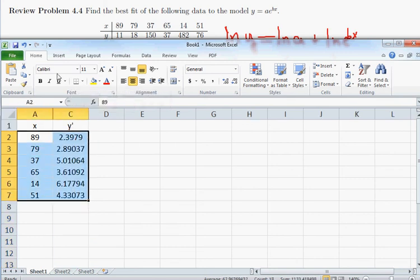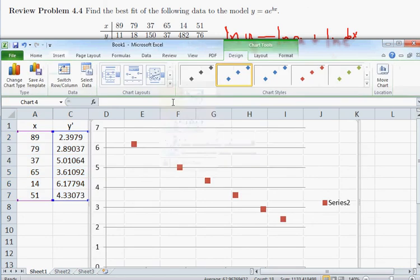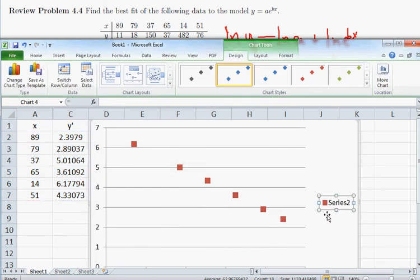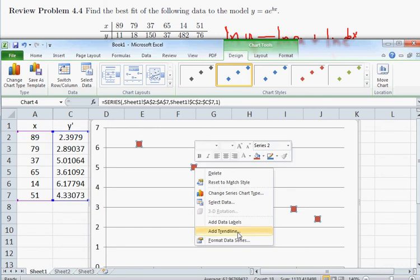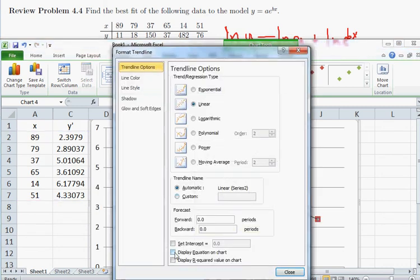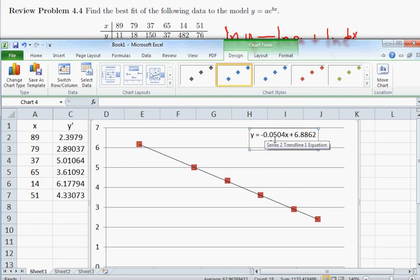Let's plot this scatter plot using the transformed y coordinates. And lo and behold, we see we have something that does now look fairly linear. So if I add the trend line, we put the equation on the chart. So we have that the trend line is that y is equal to negative 0.0504x plus 6.8862.